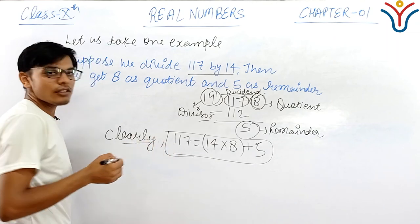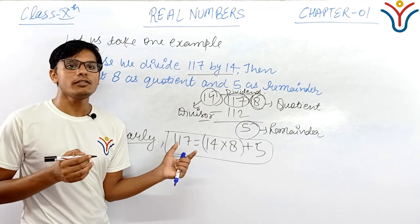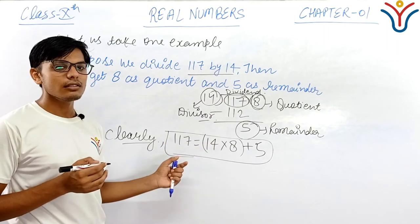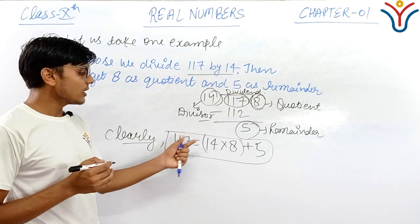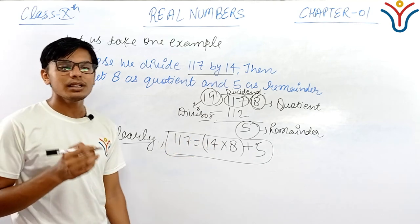This is the formula of Euclid's division algorithm. When we write the formula of dividend equals divisor multiply quotient plus remainder, then it is the same as 117, the dividend, equals 14, the divisor, times 8, the quotient, plus 5, the remainder.